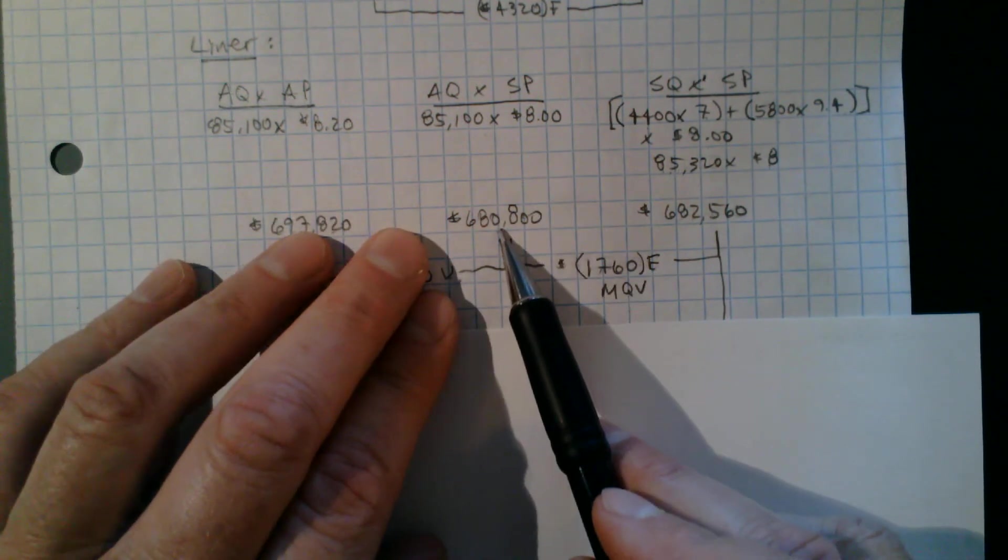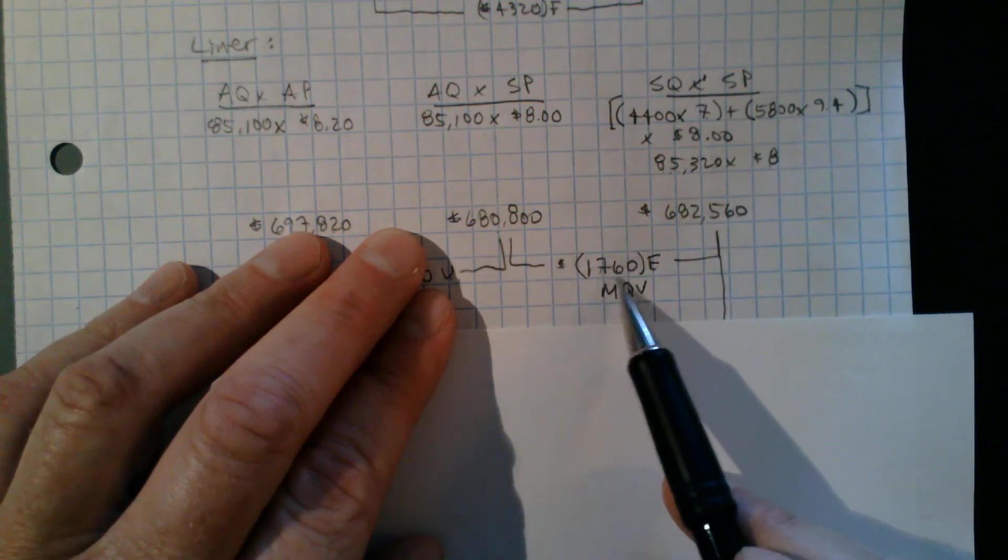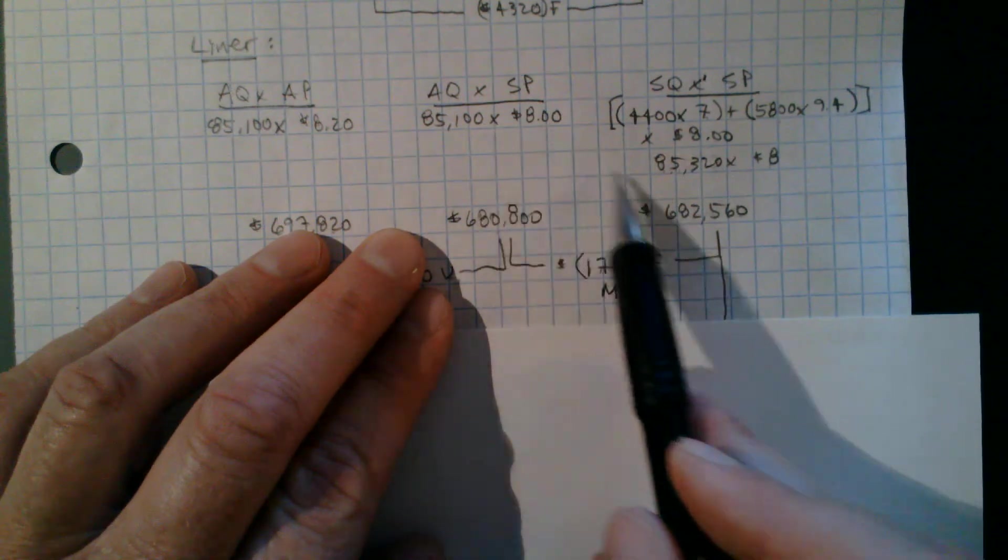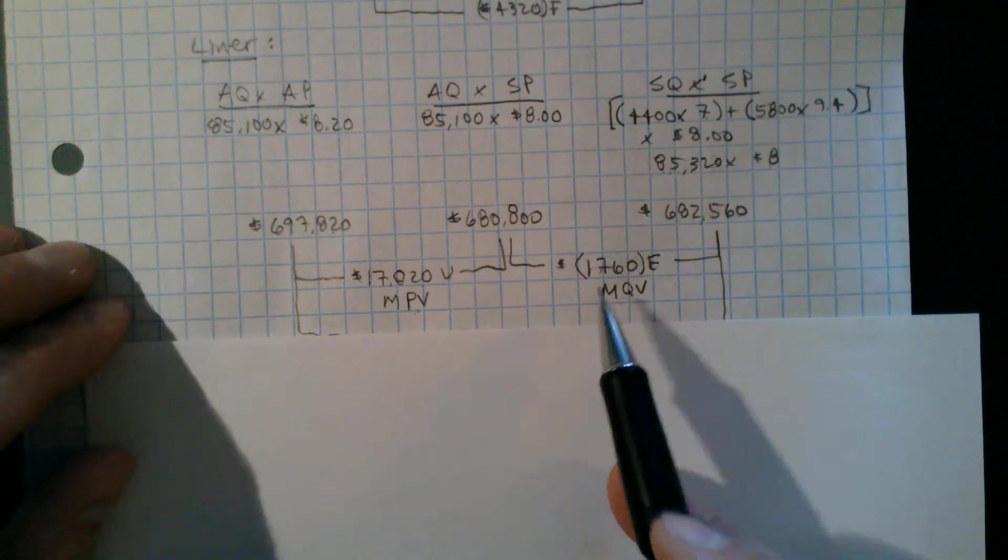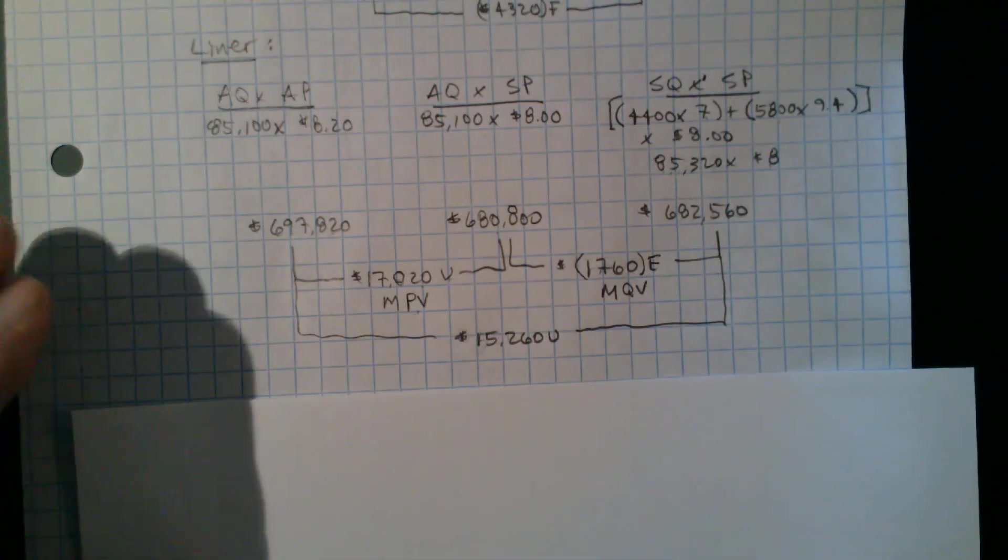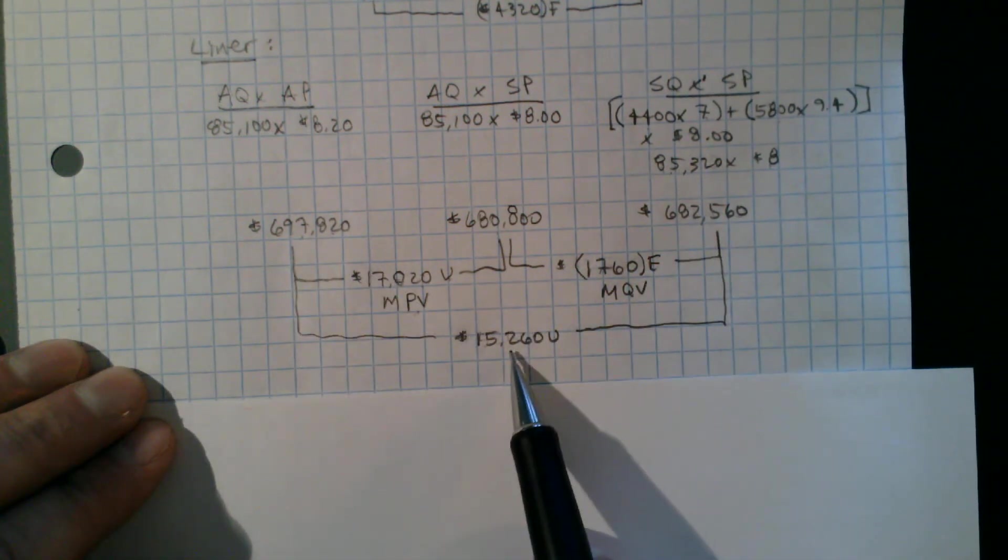And then my material quantity variance, 680,800 minus 682,560, that's a 1,760 favorable variance. So the impact financially of using less material than what the standards required had an impact of 1,760. So I can add that together to get 15,260 unfavorable as the total. And I could compare this number minus that number and get this here.